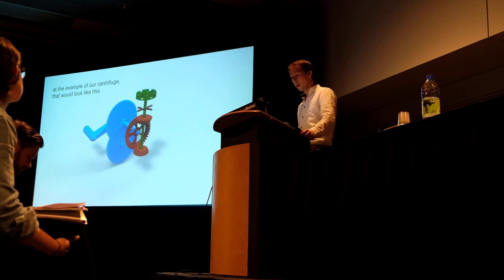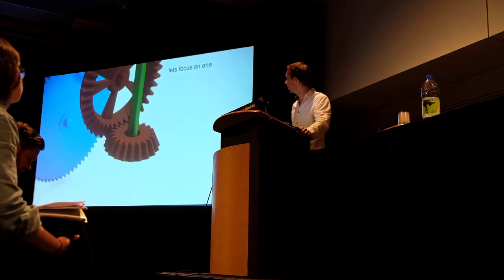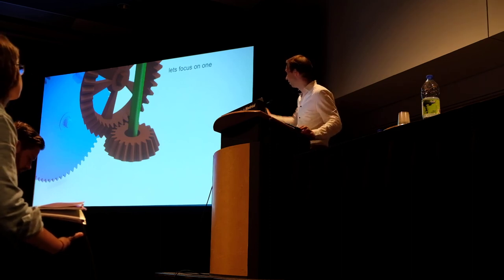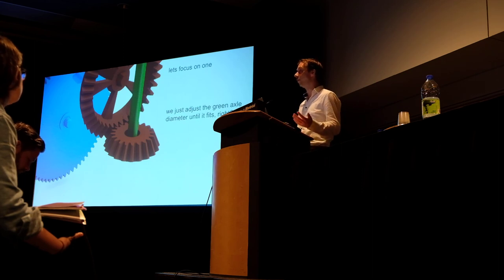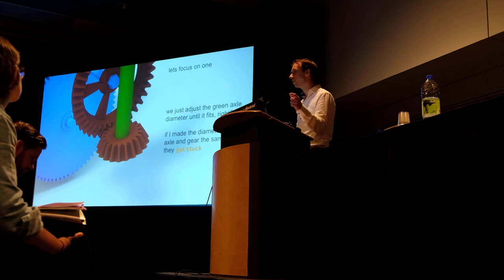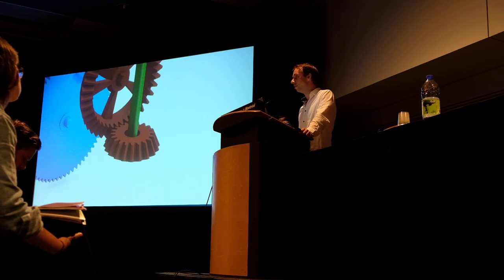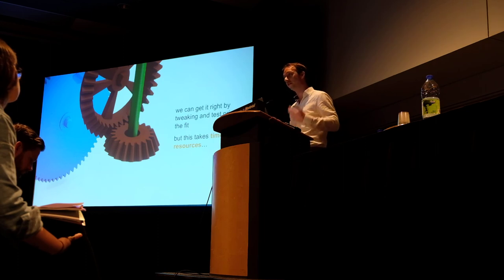In the example of our centrifuge, here are the mechanisms inside. It seems to make sense, but if you look closer it breaks at all the points where different models touch. Let's focus on one specific point: the green axle stuck inside that red gear. It doesn't seem to make sense in this configuration — there's too much margin around that axle. We could adjust the diameter until it fits, but if it's a little too big it will get stuck, and if too small we end up with a non-fitting, wobbly gear. The only way to get this right is a series of iterations of tweaking and test printing, which is very time-consuming and resource-intensive — and you have to do it at every position where different models touch.